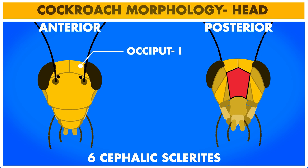The first cephalic sclerite is the occiput, which is present at the top part of the head. Occiput is made up of two parts called epicranial plates, which are joined to each other at the epicranial suture.